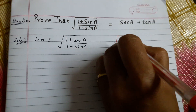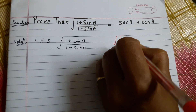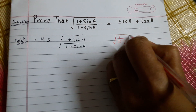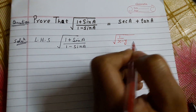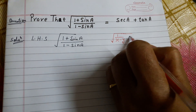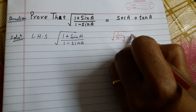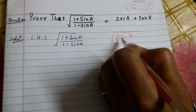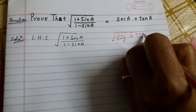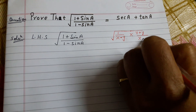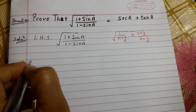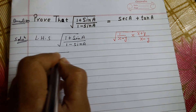We will prove this equation using the rationalization method. To take a term out of the root, we rationalize. If the denominator is of the form (x - y), we multiply numerator and denominator by its opposite sign, which is (x + y). We will call this the rationalization method, and we will apply it to this equation.